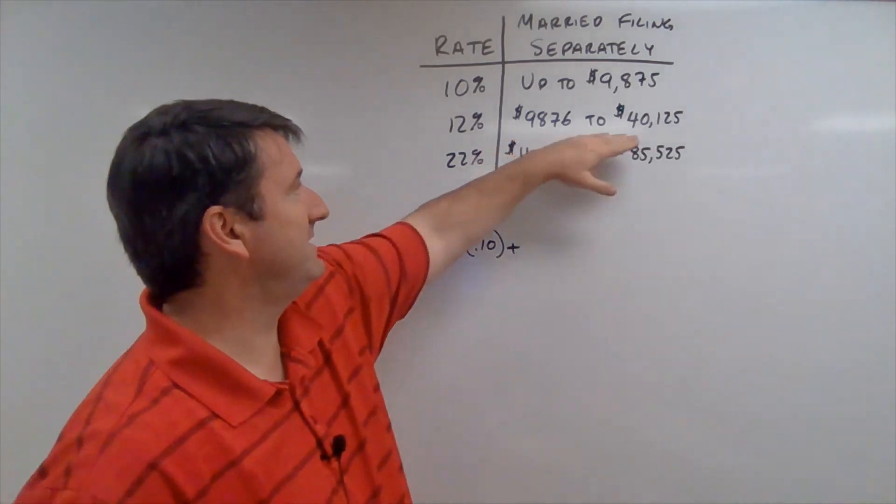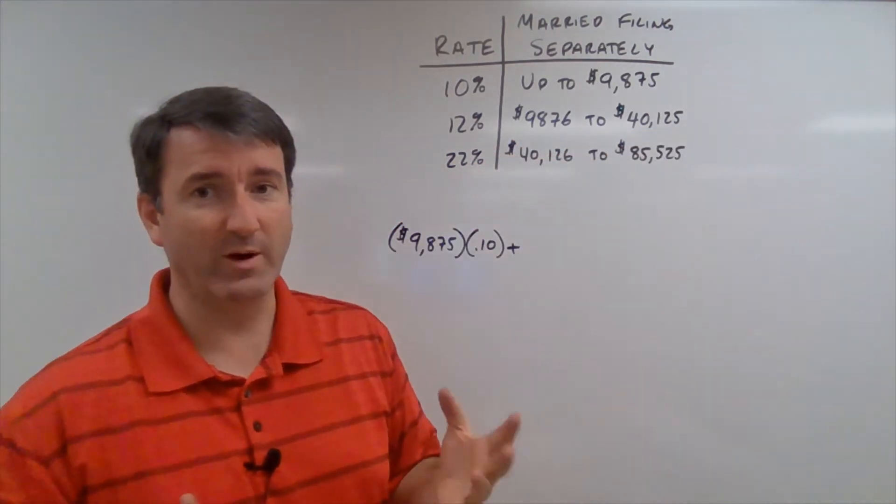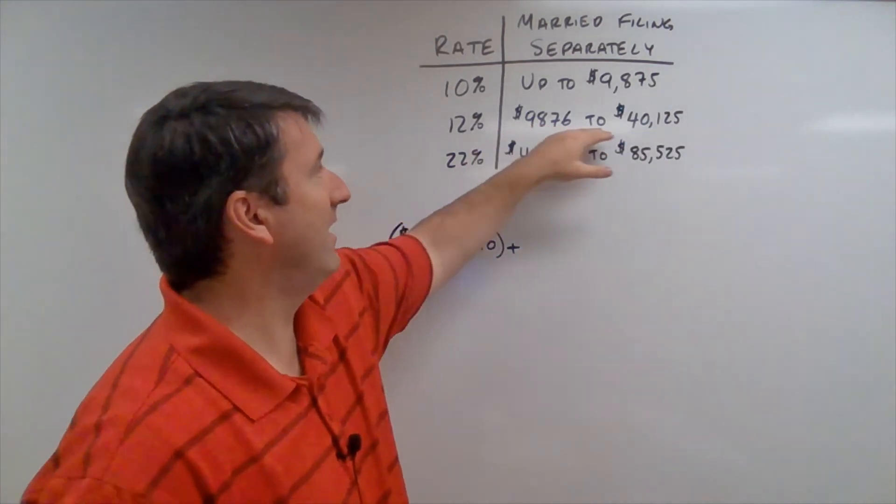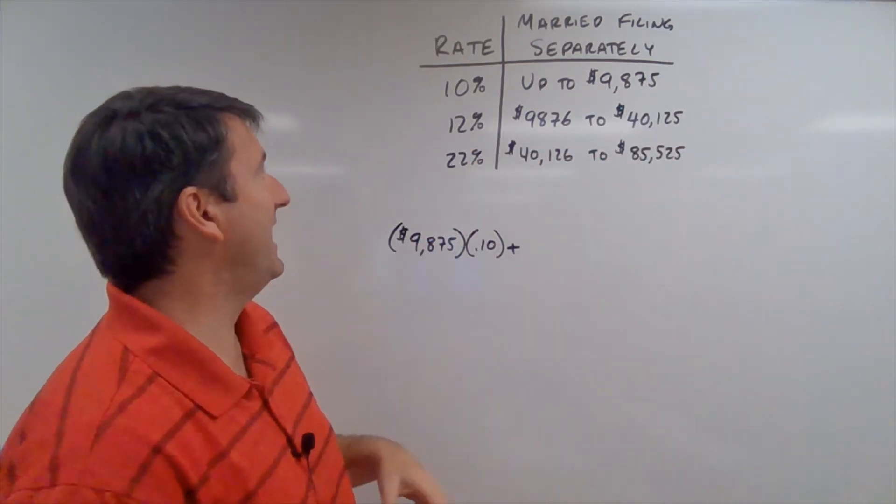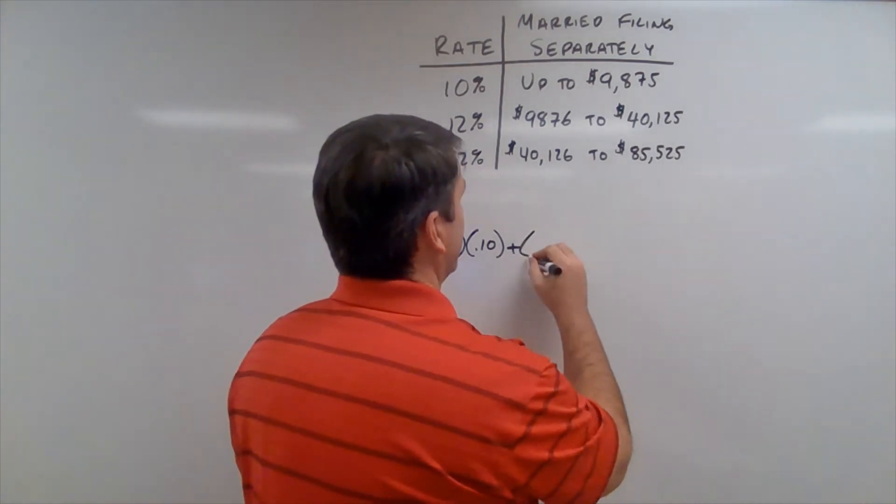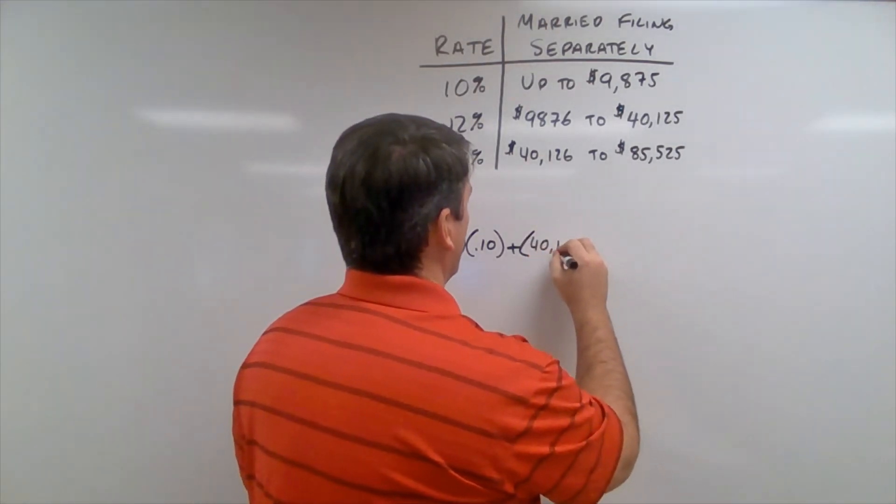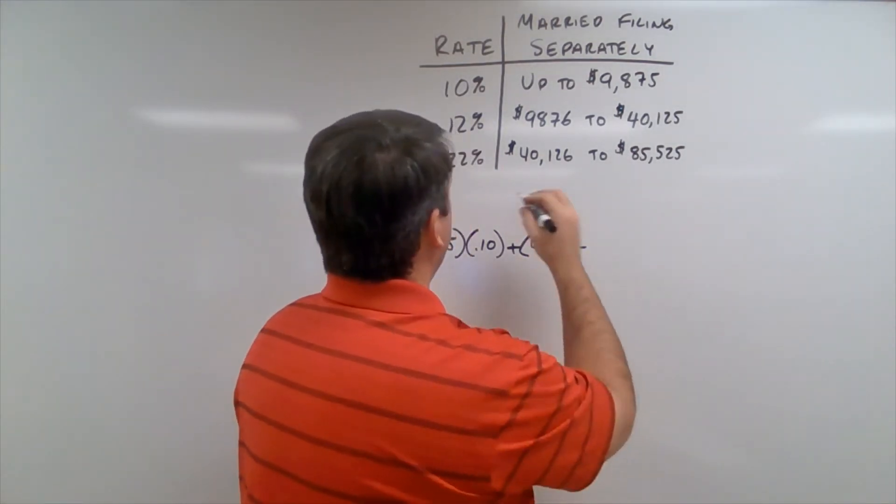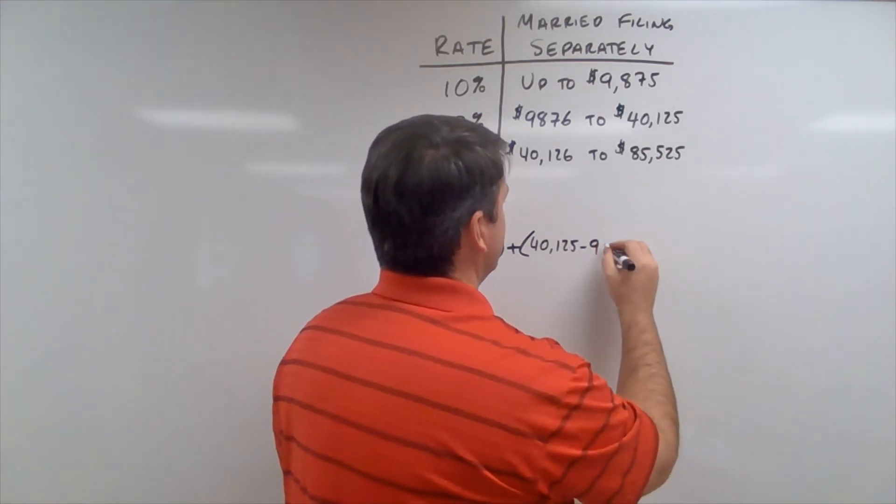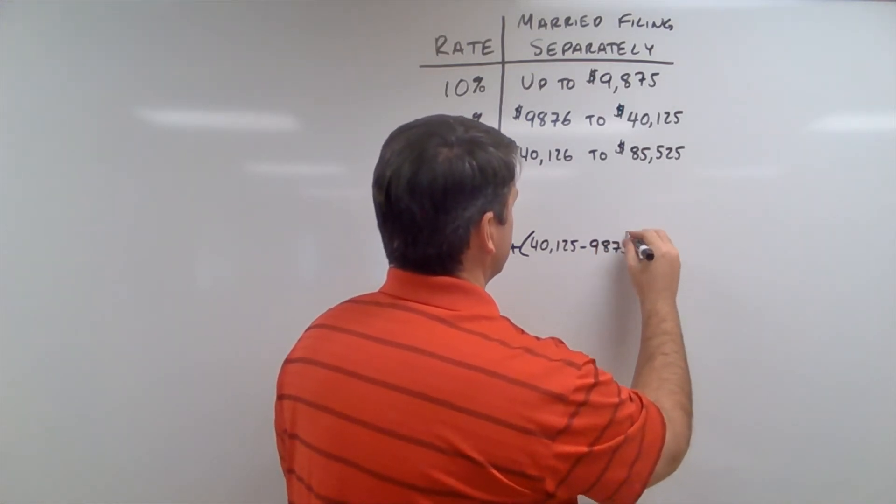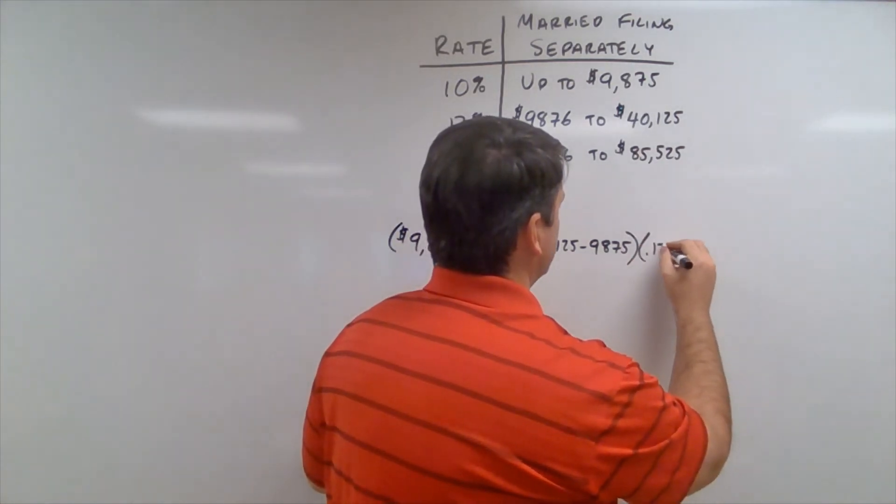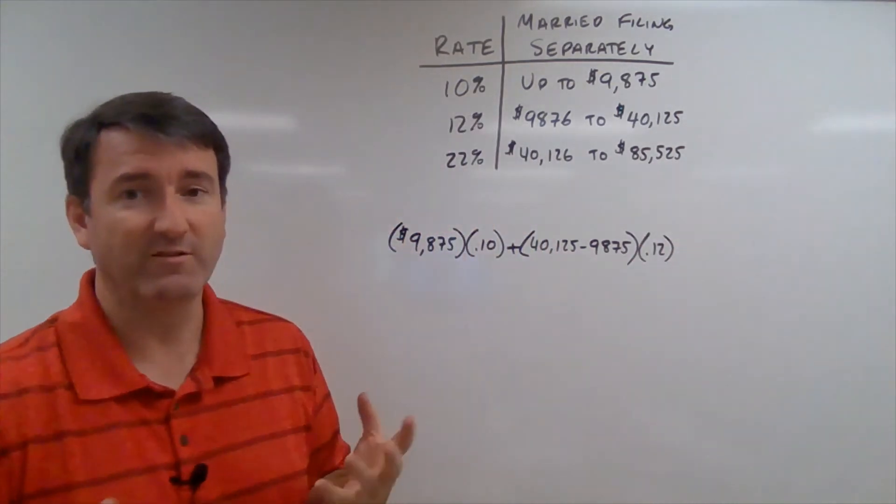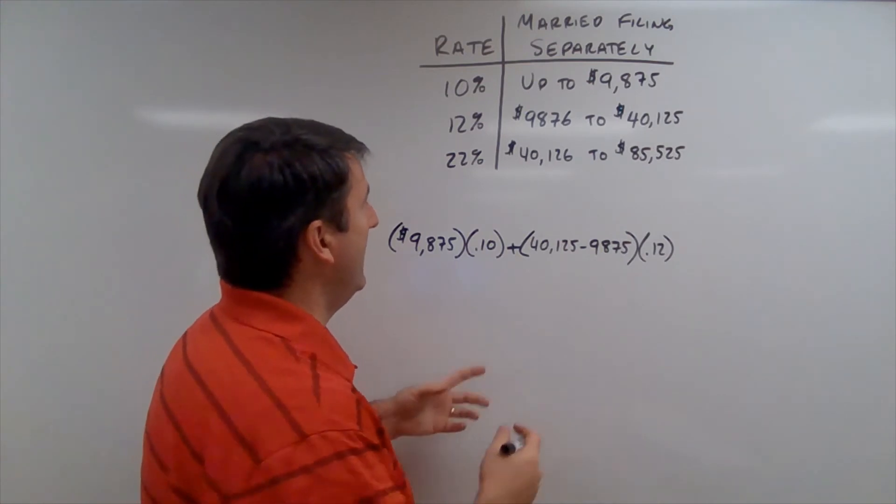And then she's also above $40,125. So, all of the money in this range, or in this margin, is going to be paid at 12%. So, we're going to take $40,125 minus $9,875. And we're going to multiply that by .12. That's going to be taxed at 12%.